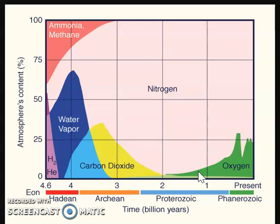Iron oxide, known as rust, falls to the bottom of the ocean. We get these banded iron formations, which are very pretty — and they are also our main source of iron for all the things we use iron for on Earth. As soon as most of the iron was used up in this chemical reaction, our second great oxidation event occurs.